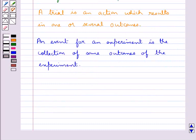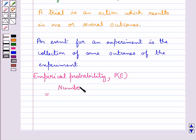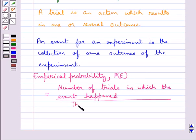Now let's see what probability is. Empirical probability—probability of an event E happening—is the number of trials in which the event happened upon the total number of trials.